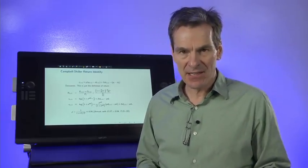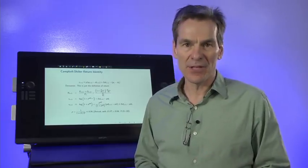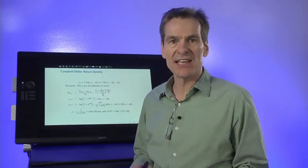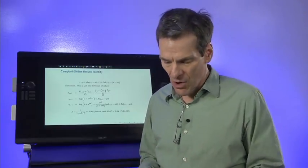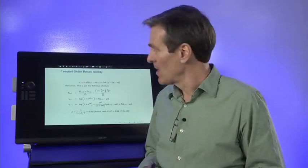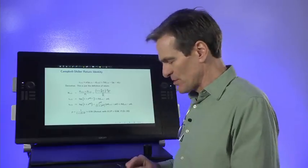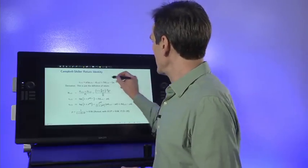First a return identity in logs, and then a present value formula in logs. And we'll use it in the same way to understand our long horizon regressions. Okay, first step is the Campbell-Shiller linearized return identity. Let's meet it.